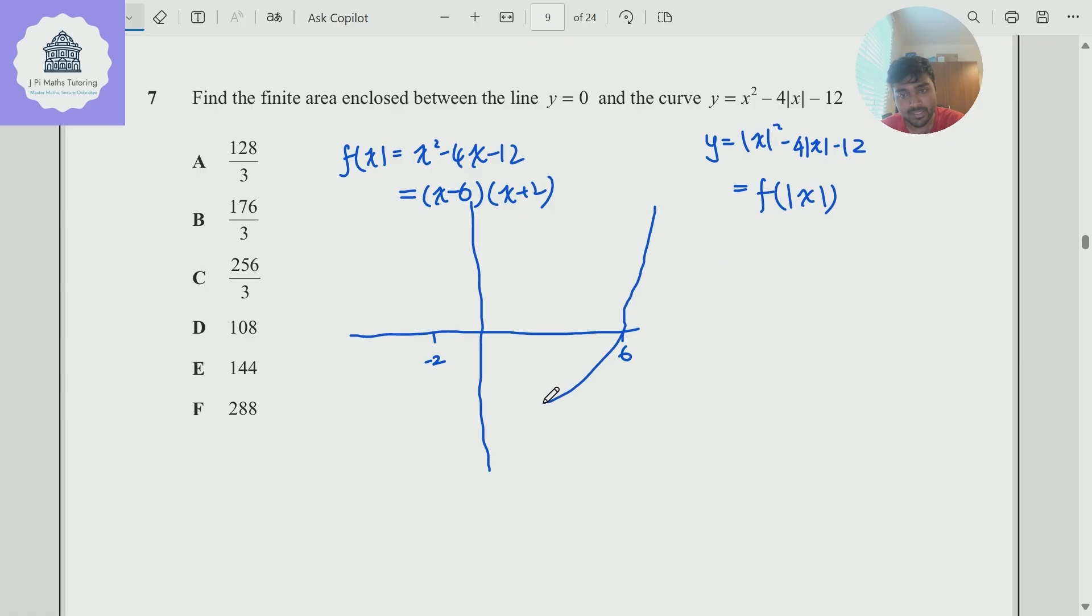But I want to sketch f of modulus x. So just using basic graph sketching rules, it's going to look like that. And then I'm going to reflect that back in the y axis. And it's going to look something like that with that there being minus 6, like so.